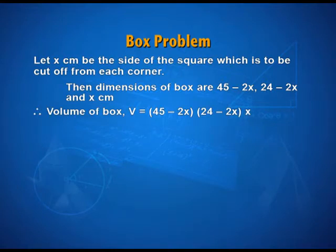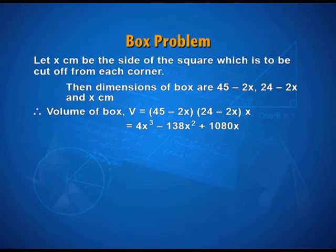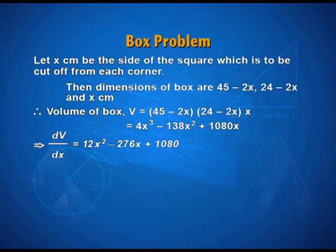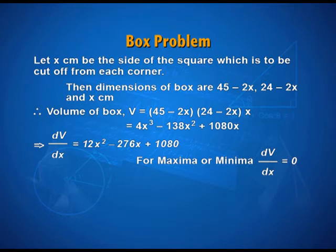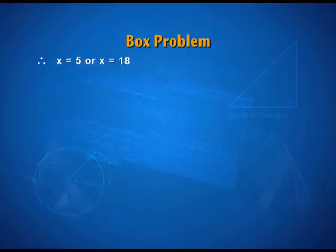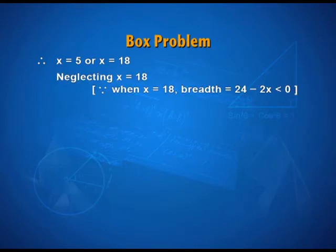The volume of the box — l × b × h — is a cubic function: V = 4x³ − 138x² + 1080x. Find the derivative to locate the point of maxima or minima. The derivative is a quadratic, set equal to 0, resulting in two values: x = 5 or x = 18. Now, x = 18 is not a possible value because when x = 18, the breadth becomes less than 0 — not a possibility. So we reject x = 18 and concentrate on x = 5.